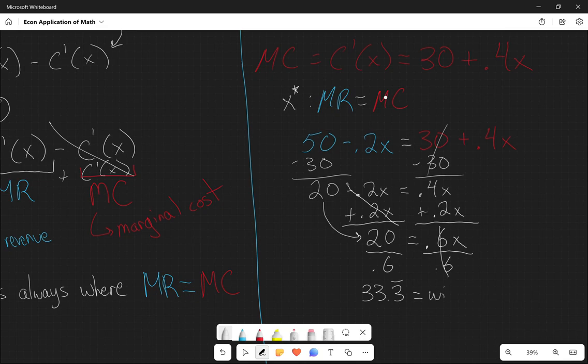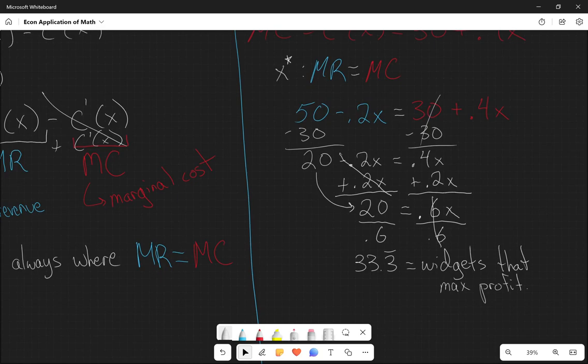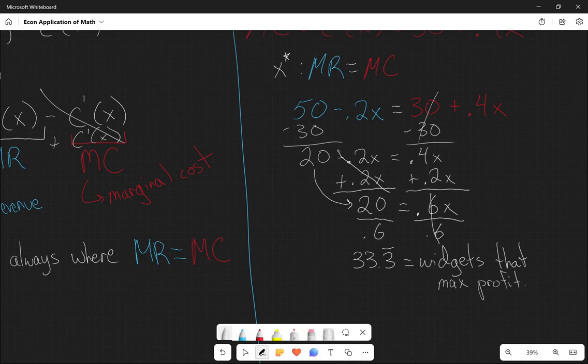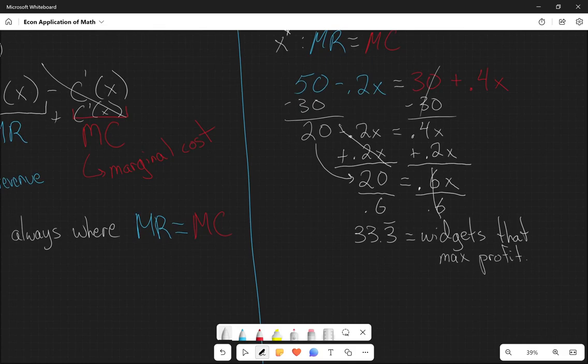This is the amount of widgets that maximize profit. And so again, we cannot create a third of a widget. Nobody wants to buy a third of a toaster. So the answer, if it was a multiple choice test or even if it was a short answer test, the answer would not be 33.3 widgets. You'd only use decimals if we're talking about like pounds of wheat or corn or something like that, things that are actually divisible. So you would just say, well, it's the 33rd widget. So we're going to do 33 widgets because that's the one that is the last one with a marginal revenue greater than the marginal cost.